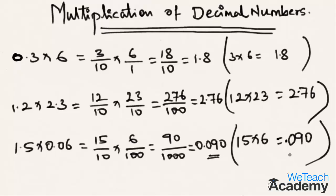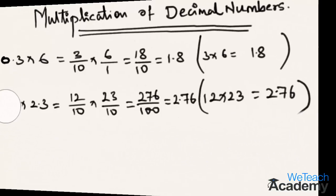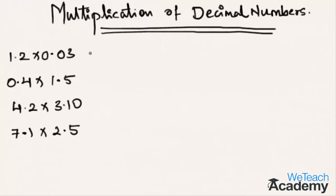Now with the same concept let us solve a few more examples. Multiply 1.2 with 0.03: this is nothing but 12 multiplied by 3, which is 36. The number of digits after decimal points in the question is 3, so the result also has the decimal point before three places from the left — that is 0.036.